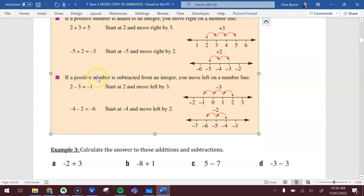If a positive number - remember, anything without a sign in front of it is assumed to be positive - is subtracted from an integer, you move left. So if you're subtracting, you're going left, going down.